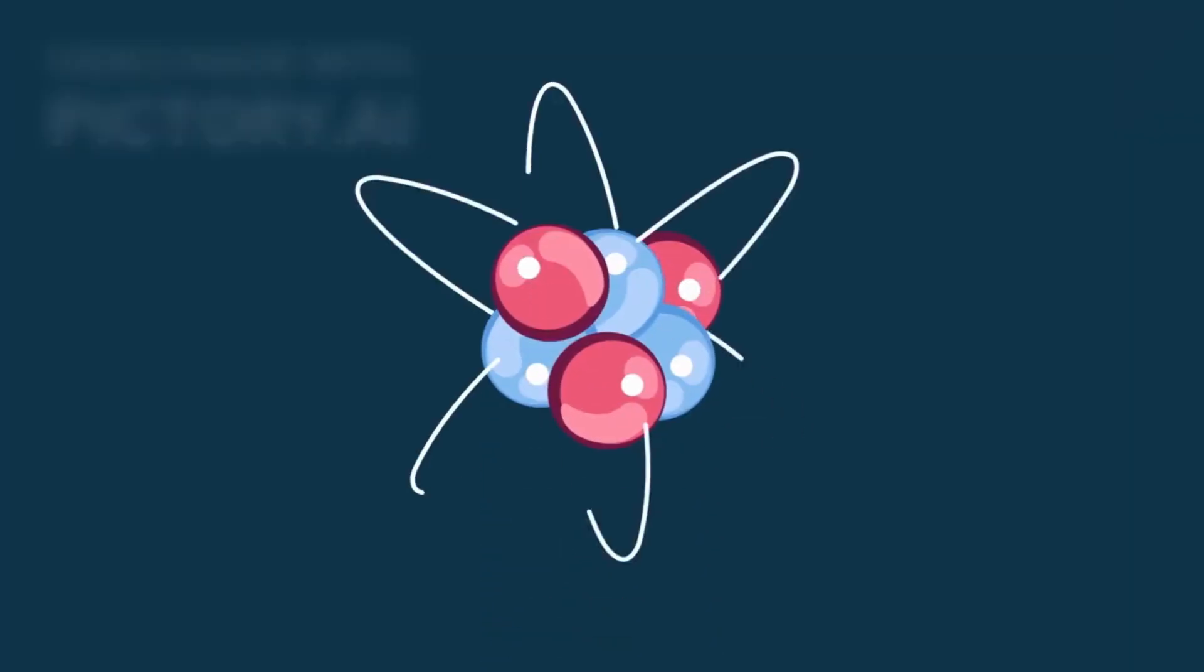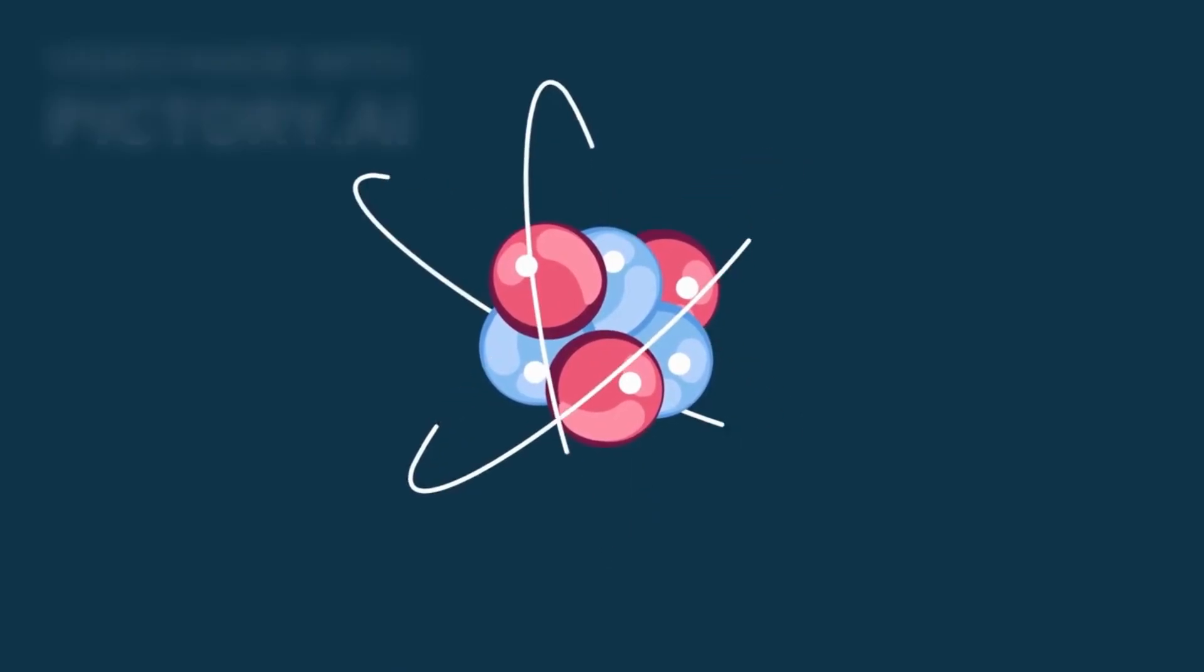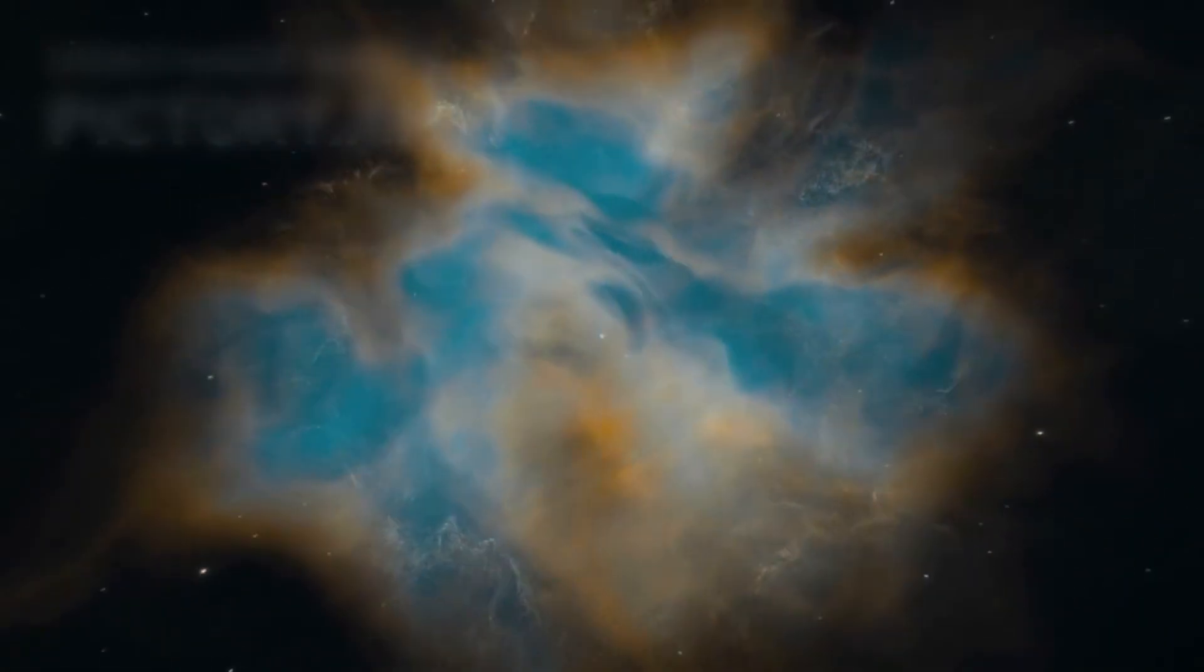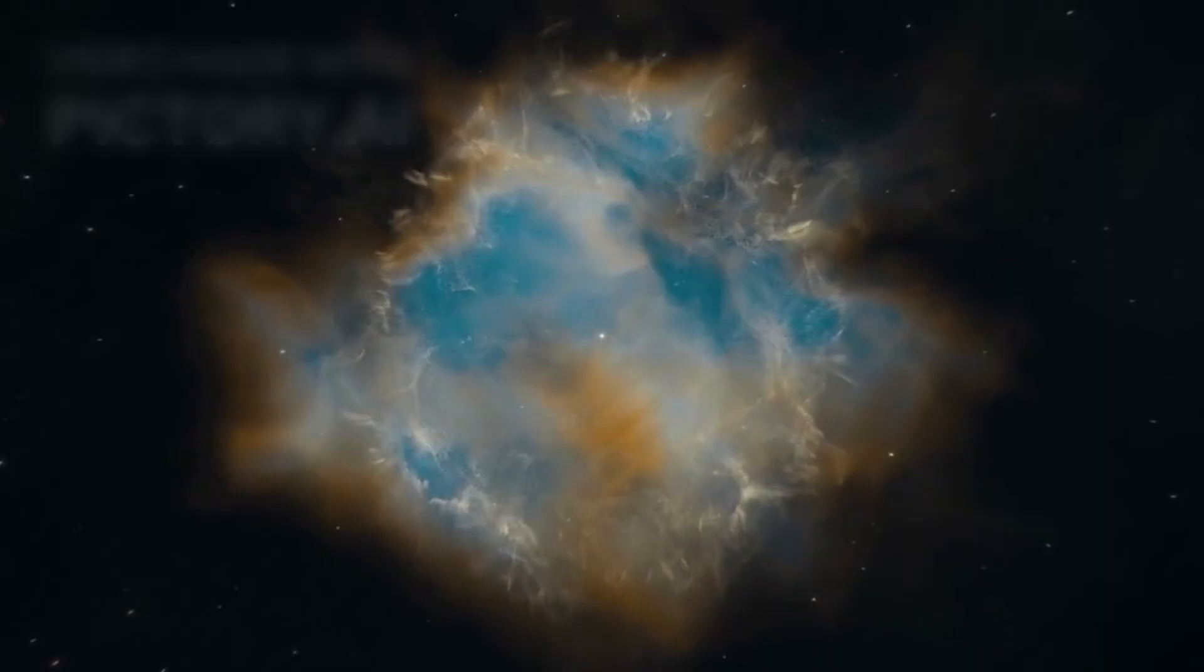In the early universe, the intense heat and density prevented the formation of stable atoms. As it expanded and cooled, particles like protons and neutrons formed nuclei, which eventually combined with electrons to create the first atoms, a process called nucleosynthesis. This set the stage for the eventual formation of stars, galaxies, and planets.